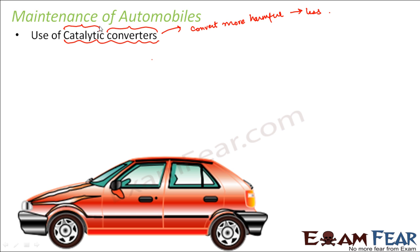Why are they called catalytic? Because they contain substances which act as catalysts. So they help in converting harmful gases into less harmful gases by acting as catalysts. These catalytic converters contain elements like platinum, palladium, and rhodium — and all of these act as catalysts.